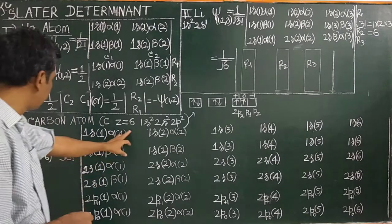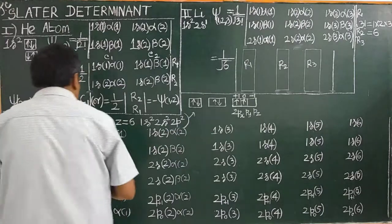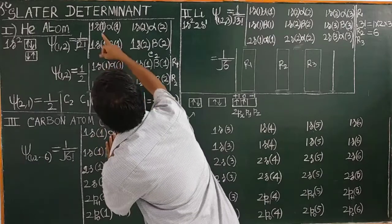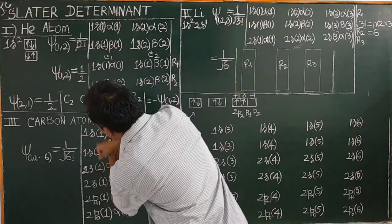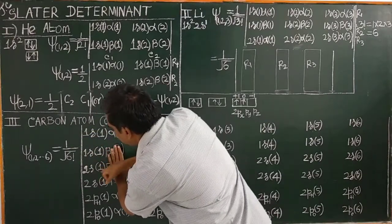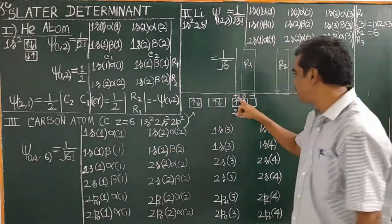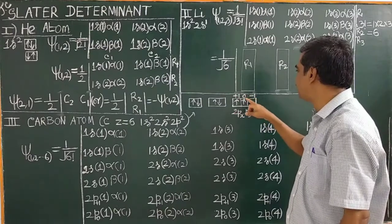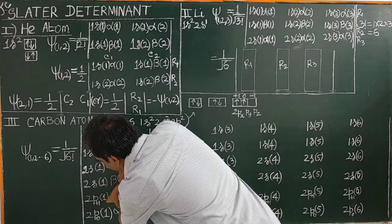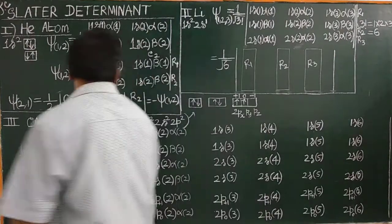Now let us see the carbon atom. Its electronic configuration is 1s², 2s², 2p². Similarly, first write the spatial part — forget about the spin. Write 1s(1), 1s(1), 1s(1). There are two electrons in the 1s orbital, so 1s(2). Next, 2s(1), 2s(1). Then 2px(1), 2py(1), 2pz(1), and 2p(1), 2p(1).